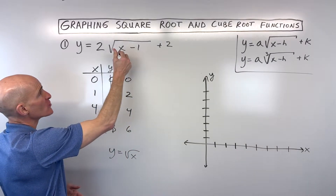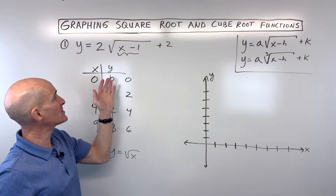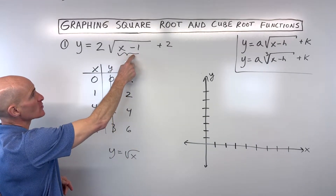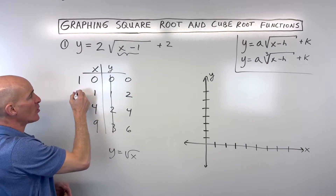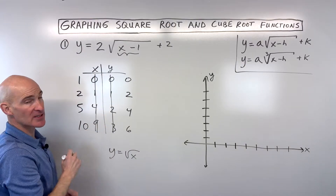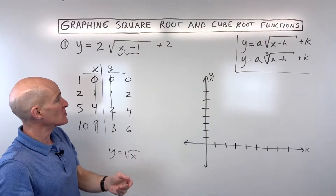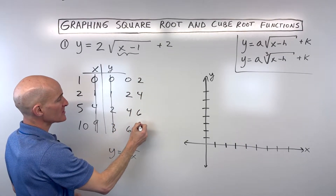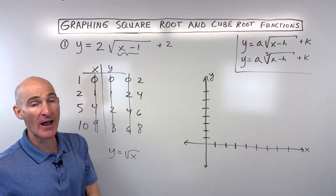Now looking at the minus 1 — when it's grouped with the x like this, it has the opposite effect. Minus 1 is actually going to shift it to the right 1, so we add 1 to the x-values, giving us 1, 2, 5, and 10. Then the plus 2 is going to shift the graph up 2, affecting the y-coordinates. Adding 2 to all the y-coordinates gives us the final coordinates to plot and graph.